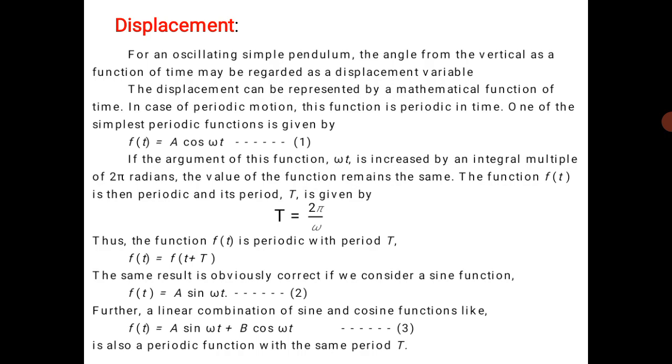f(t) = A cos(ωt) or f(t) = A sin(ωt). Both are the equation of displacement if the object is in simple harmonic motion.